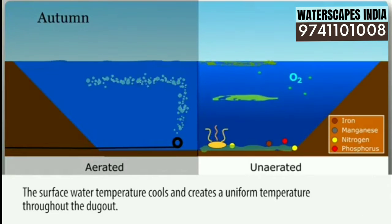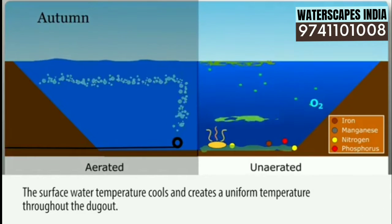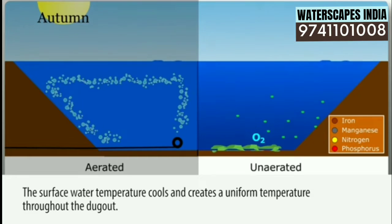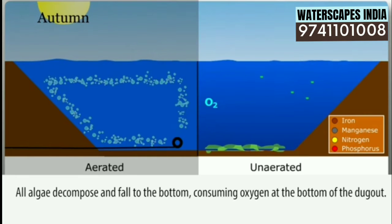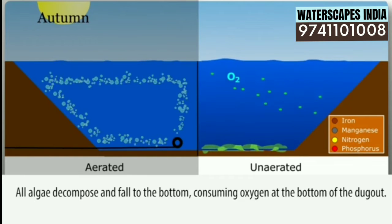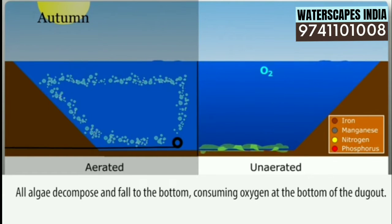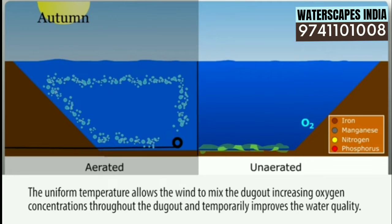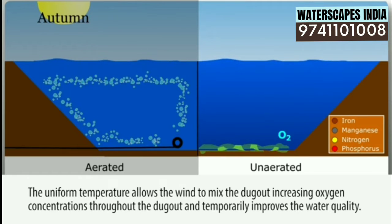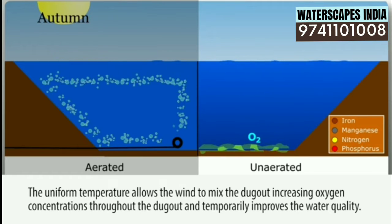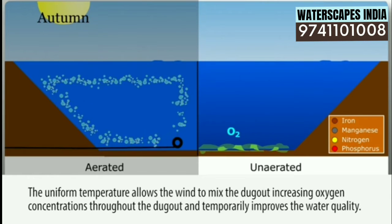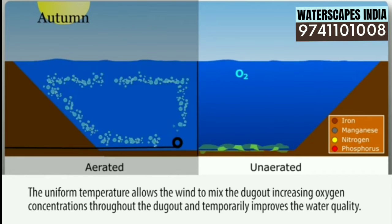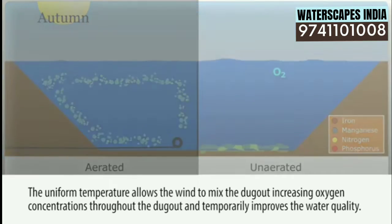Unaerated: the surface water temperature cools and creates a uniform temperature throughout the dugout. All algae decompose and fall to the bottom, consuming oxygen at the bottom of the dugout. The uniform temperature allows the wind to mix the dugout, increasing oxygen concentrations throughout and temporarily improving water quality.